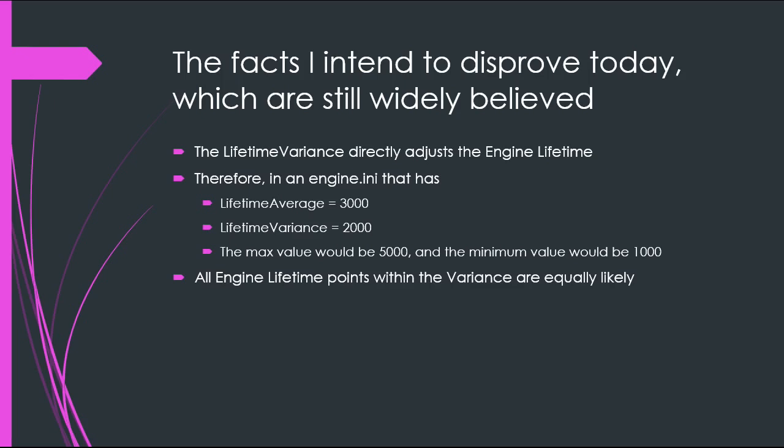The facts I intend to disprove today — which are still widely believed — are: first, that the lifetime variance directly adjusts the engine lifetime, so if you have an average of 3,000 and a variance of 2,000, the max possible value is 5,000 and the minimum is 1,000. The other point is that within that variance range, all values are equally likely — you're as likely to have a lifetime of 5,000 as you are of 1,000.